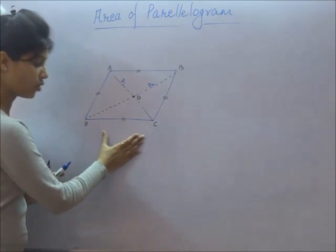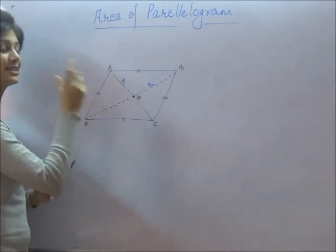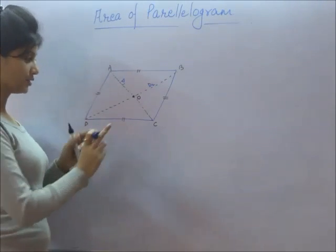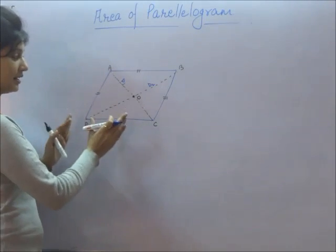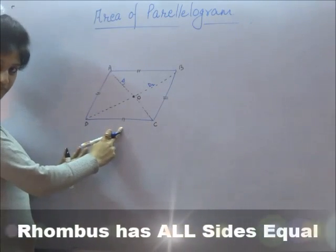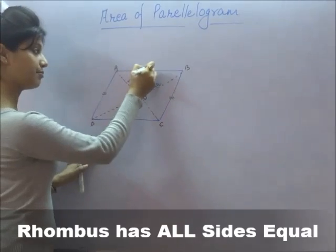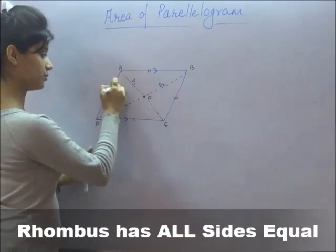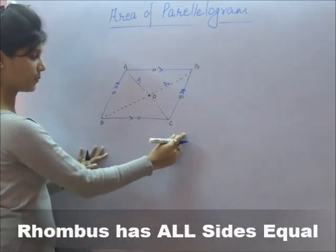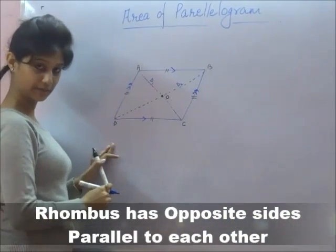If we take the case of a rhombus, as we know rhombus is a special case of parallelogram. Here we can see all four sides are equal, unlike in a parallelogram, and these are parallel also. BC is parallel to AD, and DC is parallel to AB.